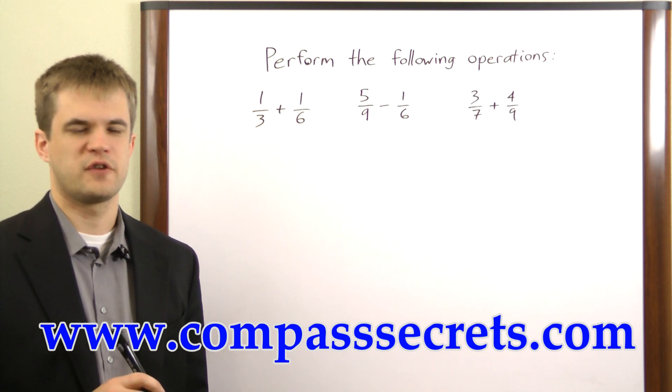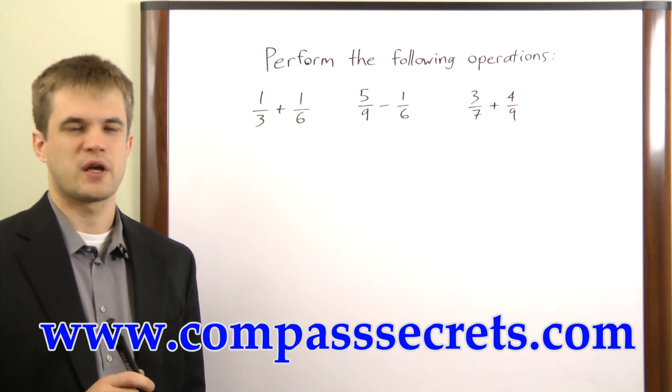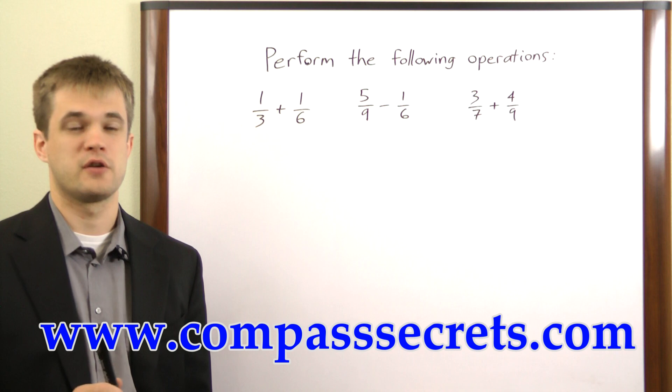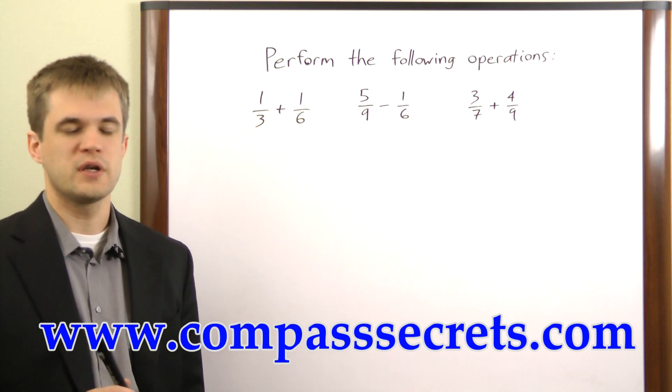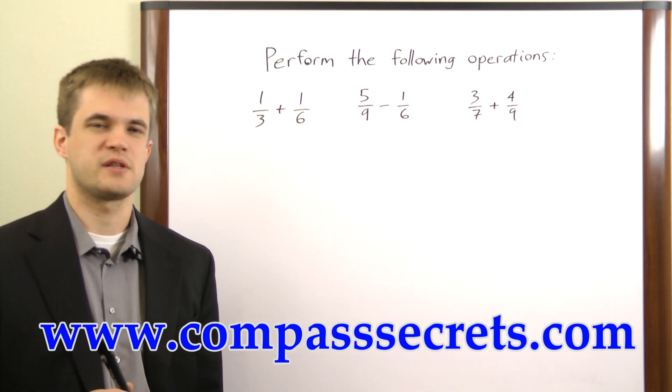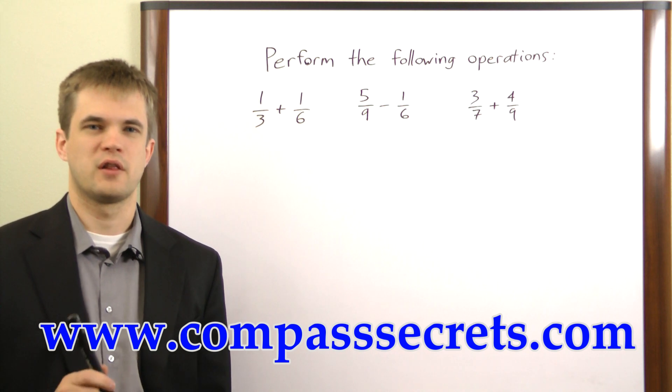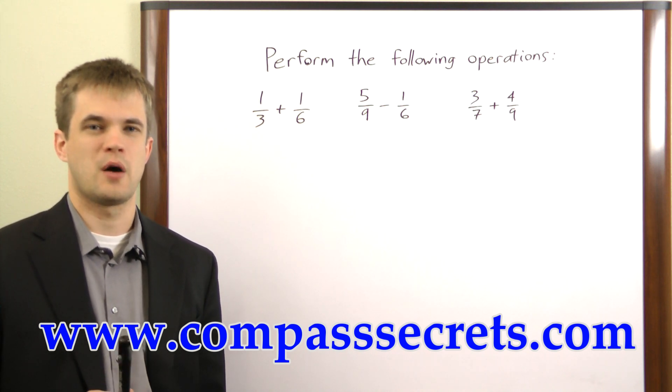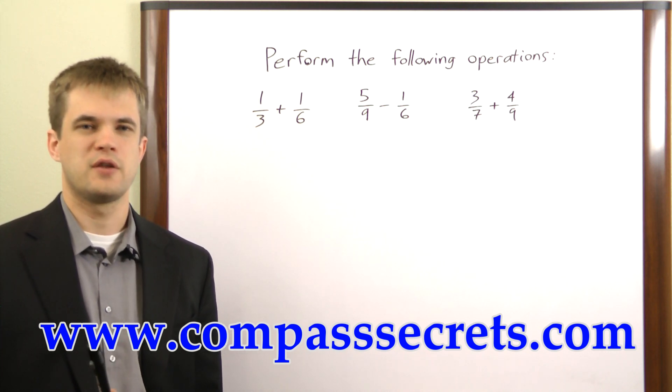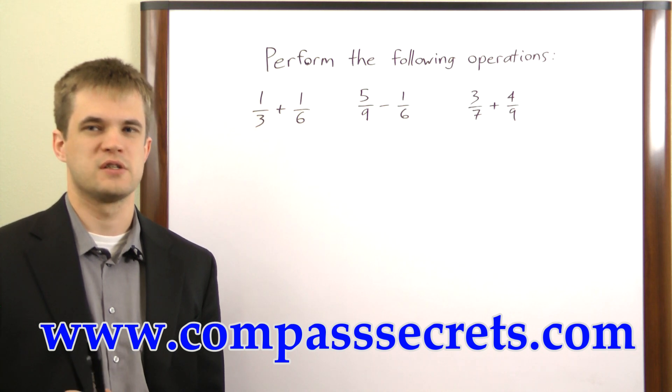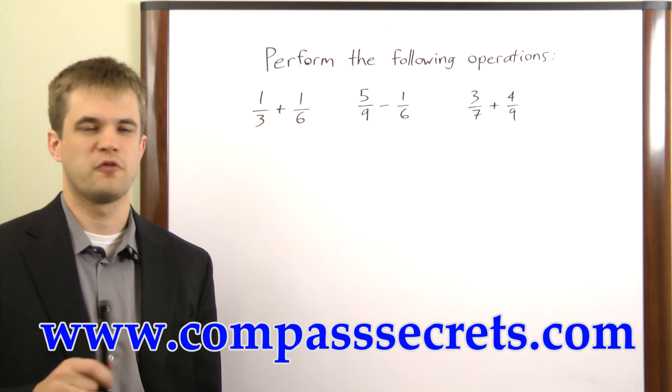When you're dealing with two fractions that have different denominators, you have to create a common denominator before you can add or subtract them. Creating a common denominator is a two-step process. First, you have to find the least common multiple between the two denominators that you have, and then you have to change one or both of the fractions to have that common denominator before you can proceed.